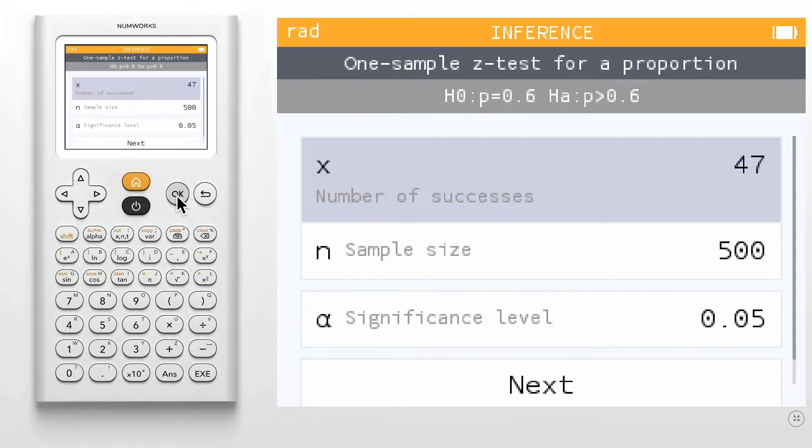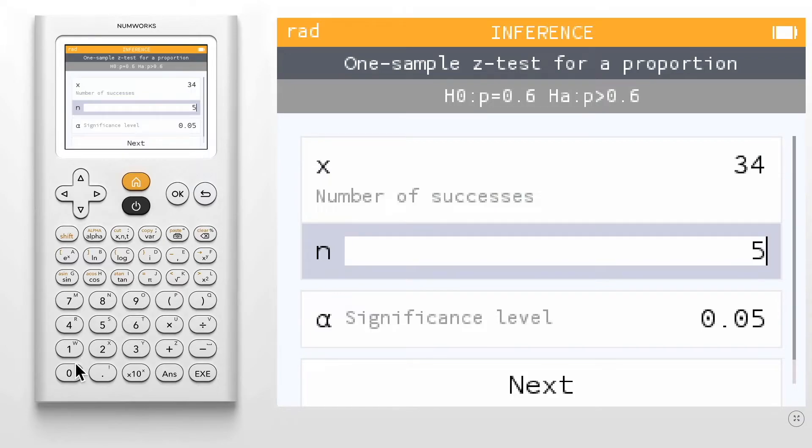We now enter the relevant values from the sample. For the one-sample z-test, we enter the number of successes and the sample size. For this example, we will use 34 and 50.